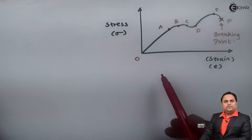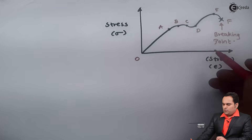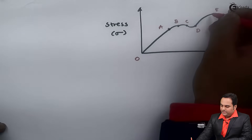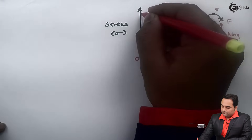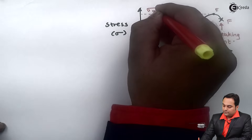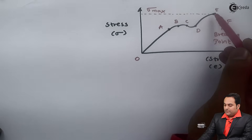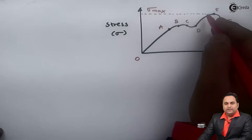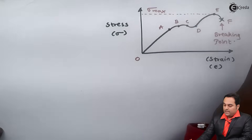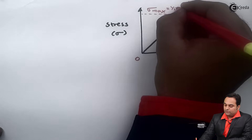Since this is the behavior of a ductile material, it will fail at point F. The maximum stress (sigma max) is at point E. From the graph, the moment a material reaches point E, after that it can break anywhere. This maximum stress for ductile material is called yield stress.